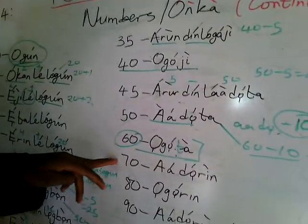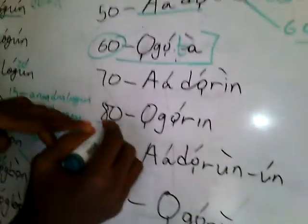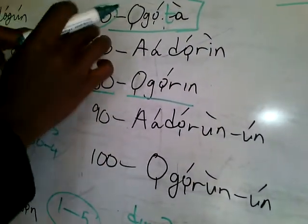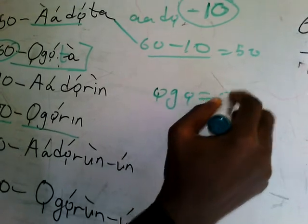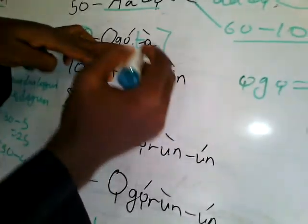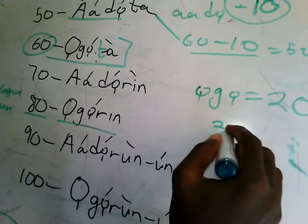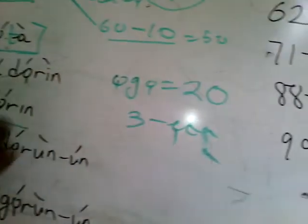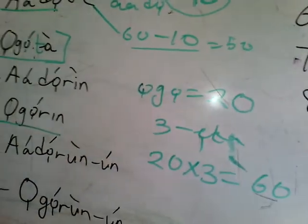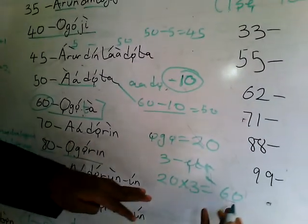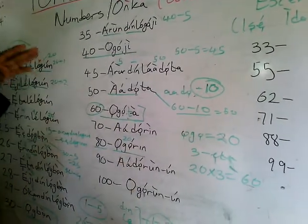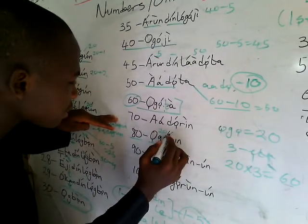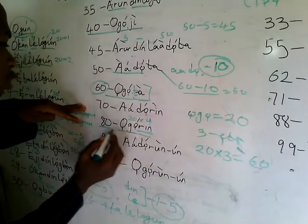For 60 and 70: 70 is Adorin and 80 is Ogoji. How did we arrive at 60? Ogota also means 20 times 3. Eta from the previous class was 3, so it is 20 times 3 to give us 60. Whenever you have Ogota, the Ogun here is 20. We use 20 to get up to 100. So we have 20 times 4, and Erin is 4, giving us 80.